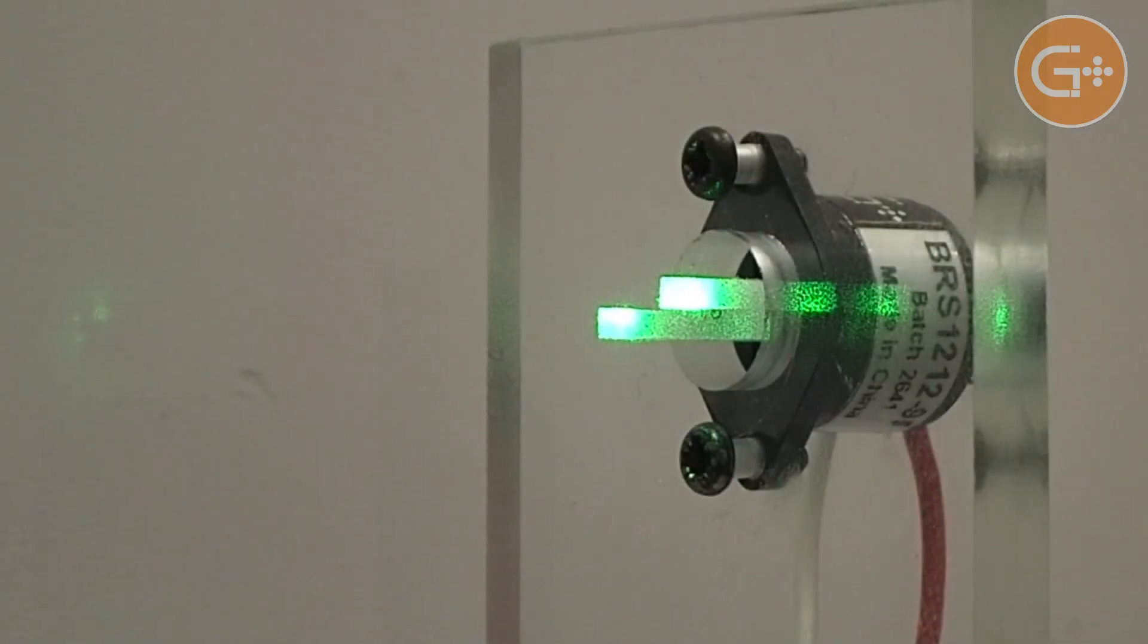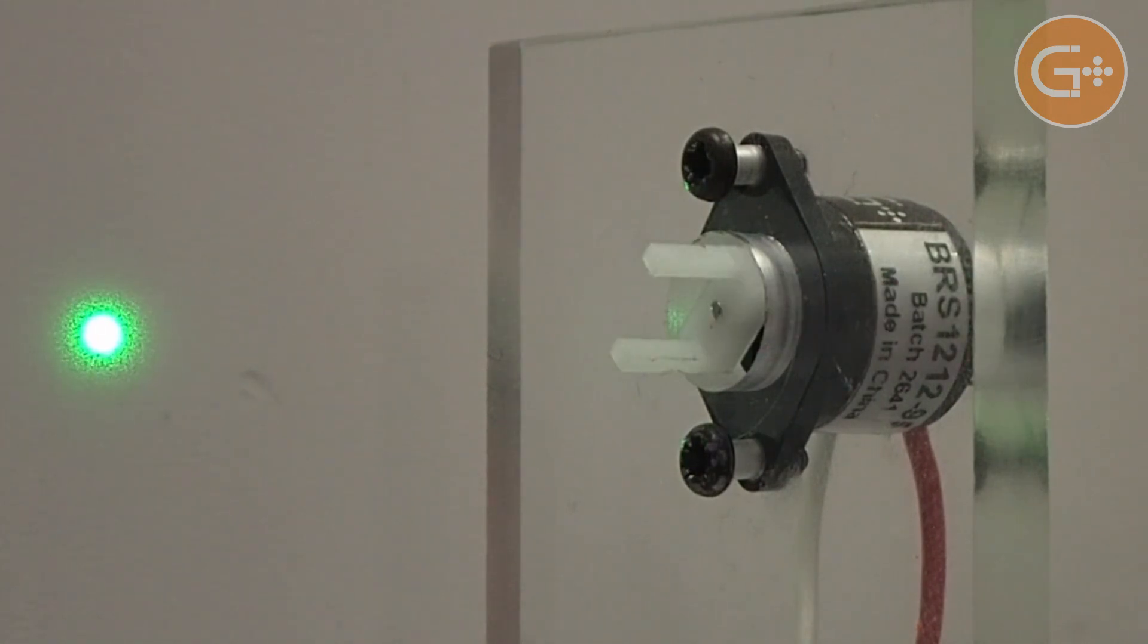When used in conjunction with a lightweight shutter blade, the solenoid is ideal for blocking laser, infrared, and other forms of light.